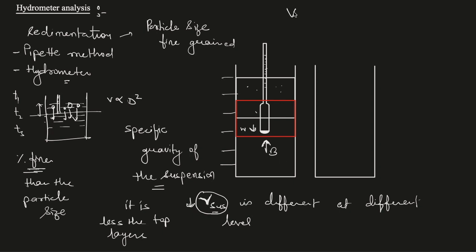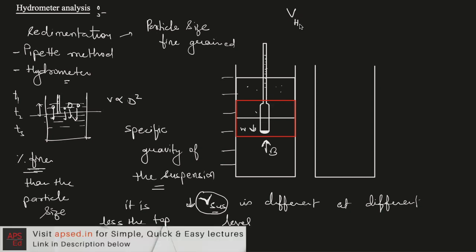For the same weight of the hydrometer, it will sink more and more because more fluid is required to develop the same buoyant force as the unit weight at the top layers reduces. The buoyant force equals the volume of fluid displaced times the unit weight of the suspension. Because gamma is reducing, the hydrometer displaces more volume by sinking deeper, and we can read these readings on the scale.